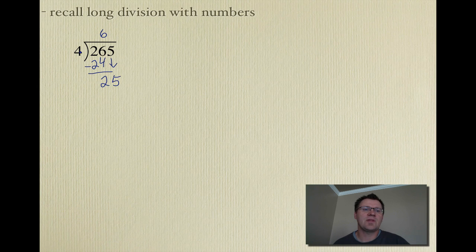We get 25 because we pull down that 5. Now, we say, how many times does 4 go into 25? Well, it goes in evenly 6 times. 6 times 4, again, is 24. We're left with a remainder of 1. So, what we're saying is if 265 is divided by 4, you get as an answer 66, and you get 1 left over. And that is 1 out of 4. So, you get 66 and a quarter.